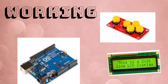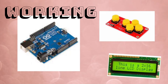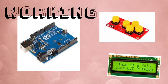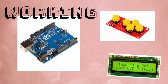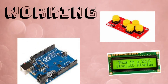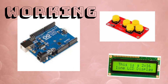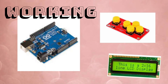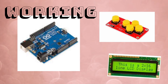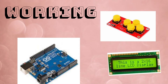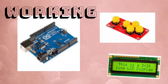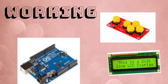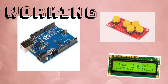Voters use the input devices to select their preferred candidates or options. Upon selection, the Arduino registers the vote and updates the vote count for the chosen candidate. The system continuously keeps track of the votes for each candidate. Once voting is completed, the Arduino-based system can display the total votes for each candidate.